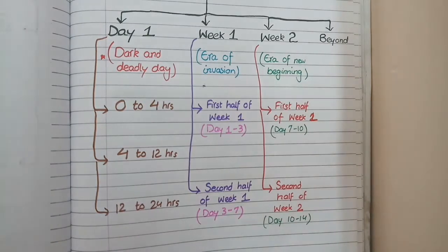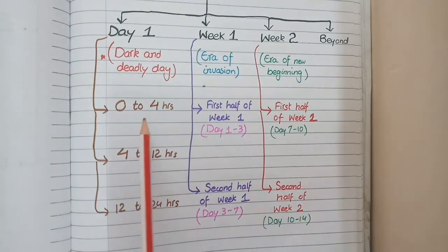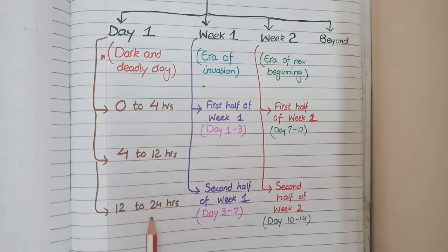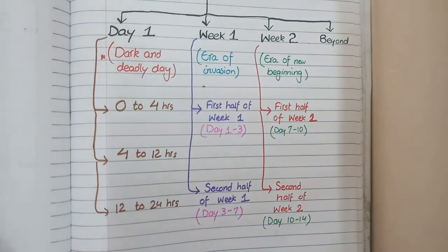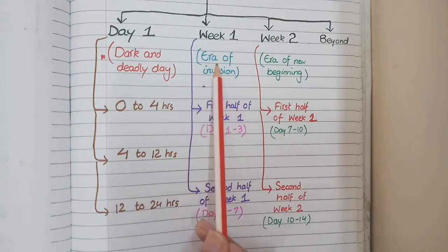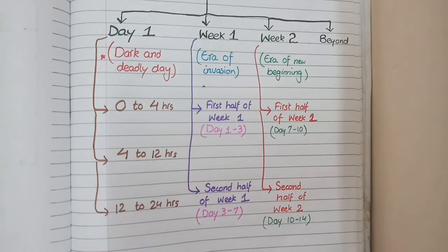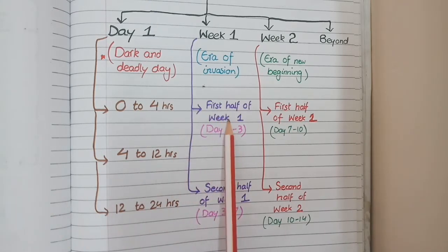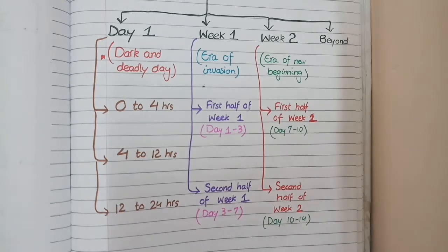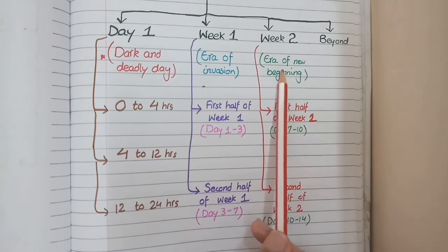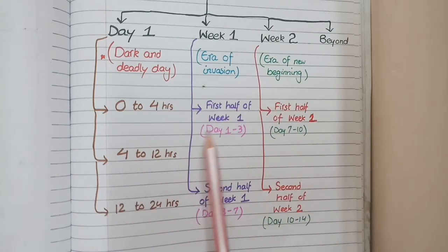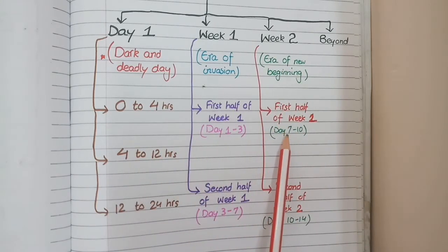We will divide day 1 into three parts: 0 to 4 hours, 4 to 12 hours, and 12 to 24 hours. Week 1 will be called the era of invasion — we will see later who these invaders actually are. Week 1 is divided into the first half, day 1 to day 3, and the second half, day 3 to day 7. Week 2 will be remembered as the era of new beginnings, divided into day 7 to day 10 and day 10 to day 14.